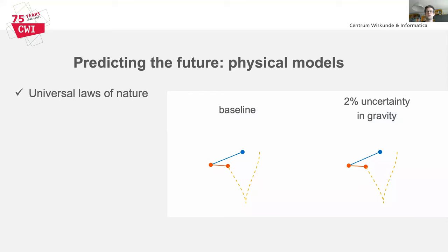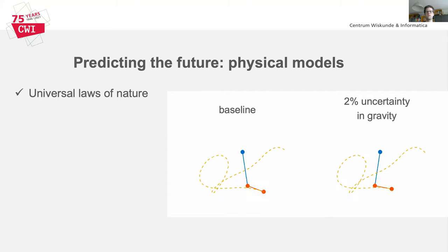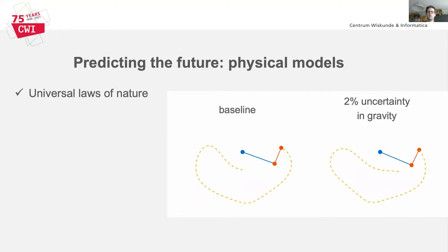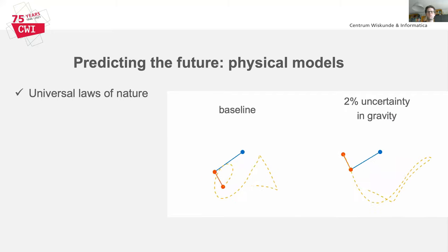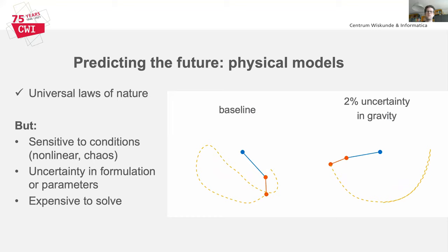On the right, you see an example of a physics-based simulation of a simple double pendulum system. As you will see, a very small change in conditions — in this case the gravitational constant — can lead to completely different results in the long run. The non-linear chaotic nature of these models, and the uncertainty present in their formulation, makes future predictions with only physical models difficult. Another complication is that for realistic applications such as climate predictions, these models are computationally very expensive to solve.